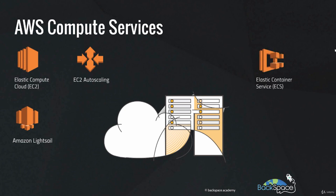Amazon Elastic Container Service, or ECS for short, is a highly scalable, high-performance container management service for Docker containers. The containers will run on a managed cluster of EC2 instances. AWS Lambda is a serverless service and lets you run code in the AWS cloud without having to worry about provisioning or managing that service. You just upload your code and AWS takes care of everything for you.